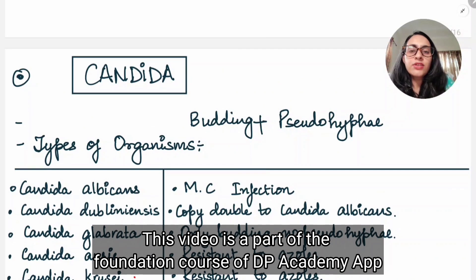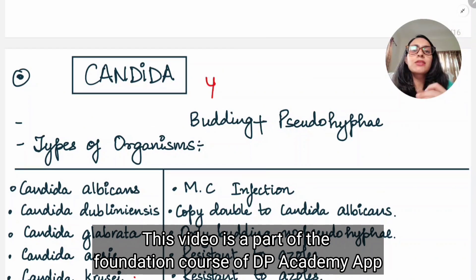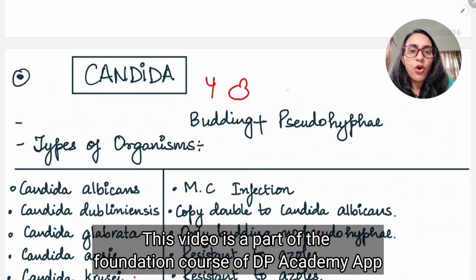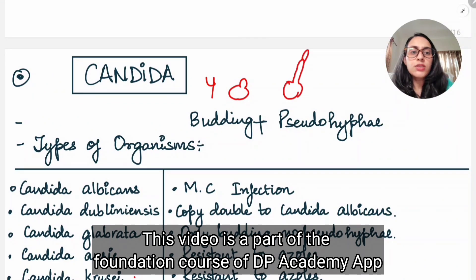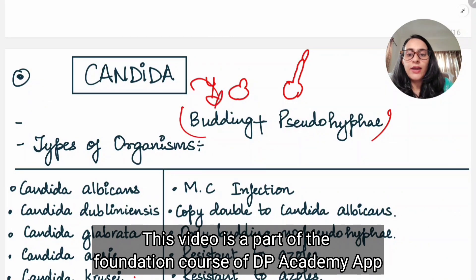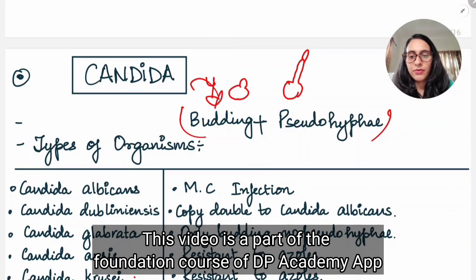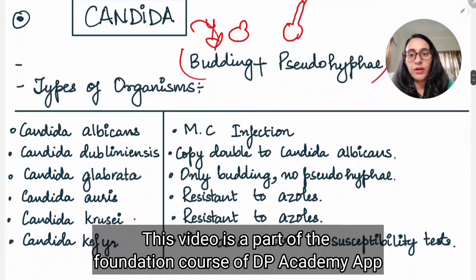Candida is yeast-like, which means it is going to show budding. Also it is going to show pseudo hyphae. It shows budding and pseudo hyphae because it is a yeast-like fungus.